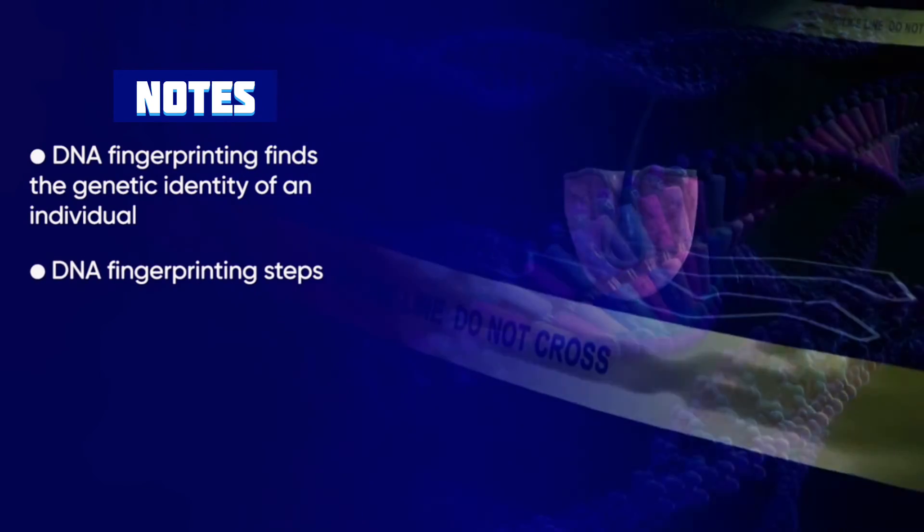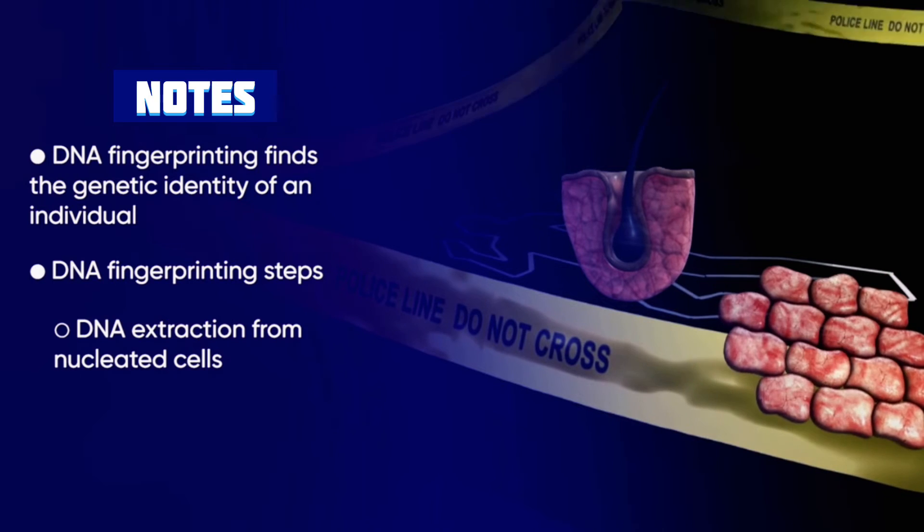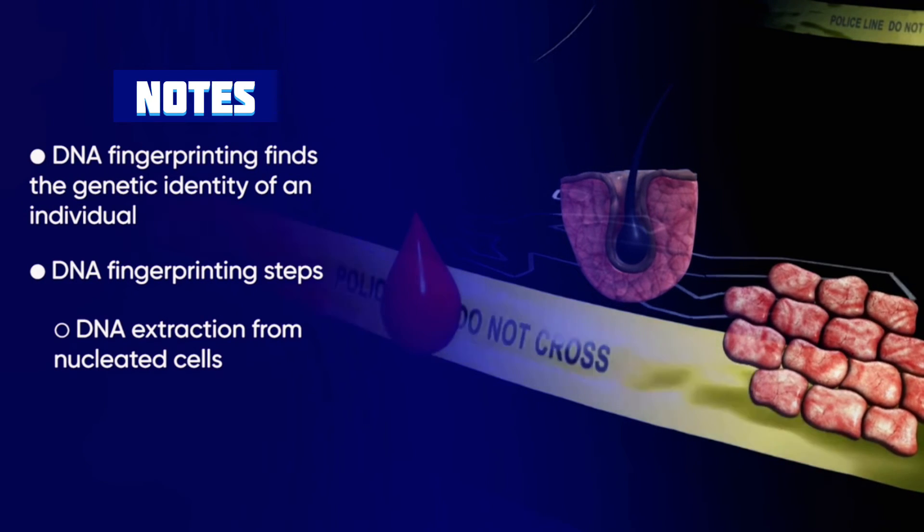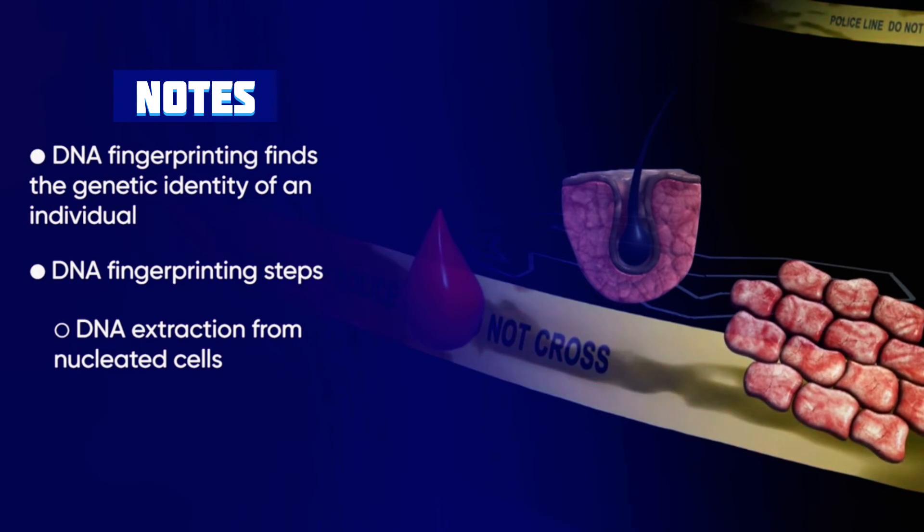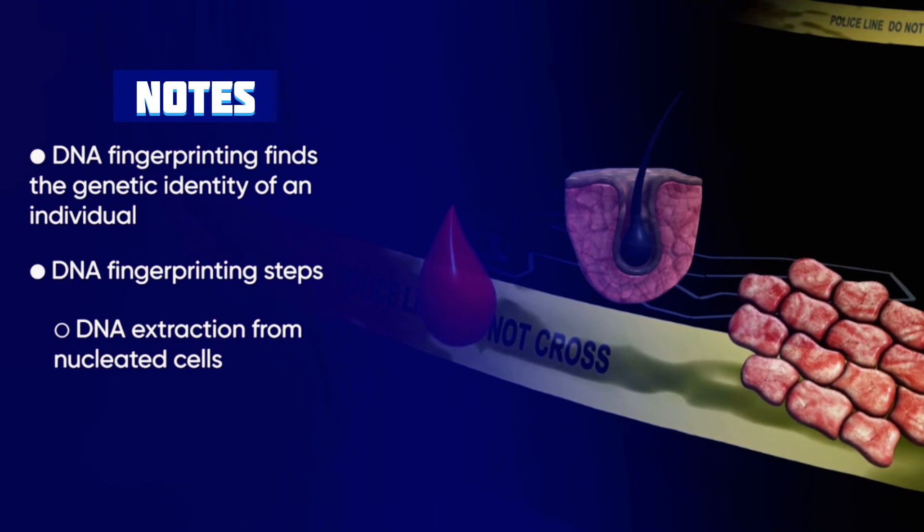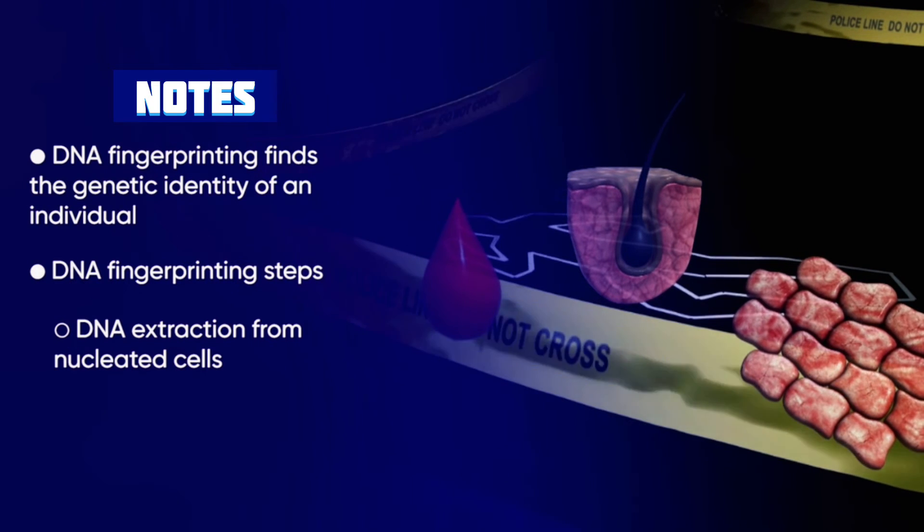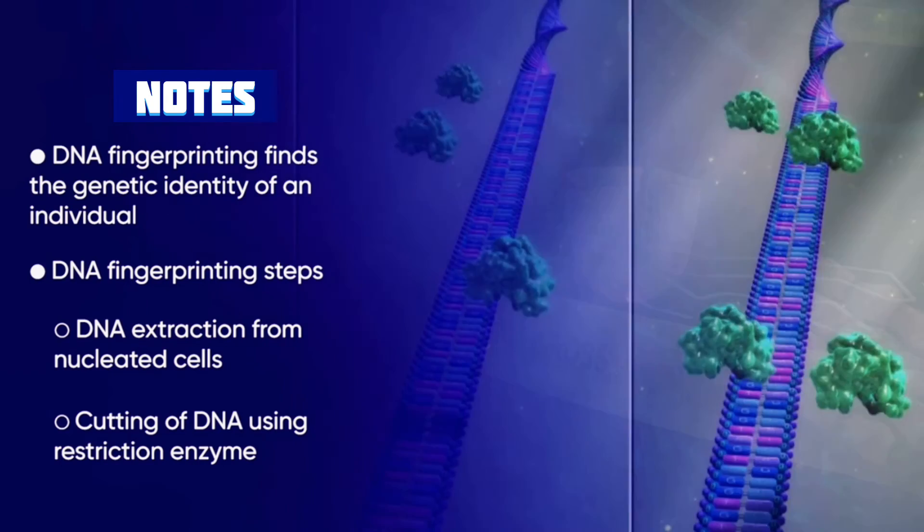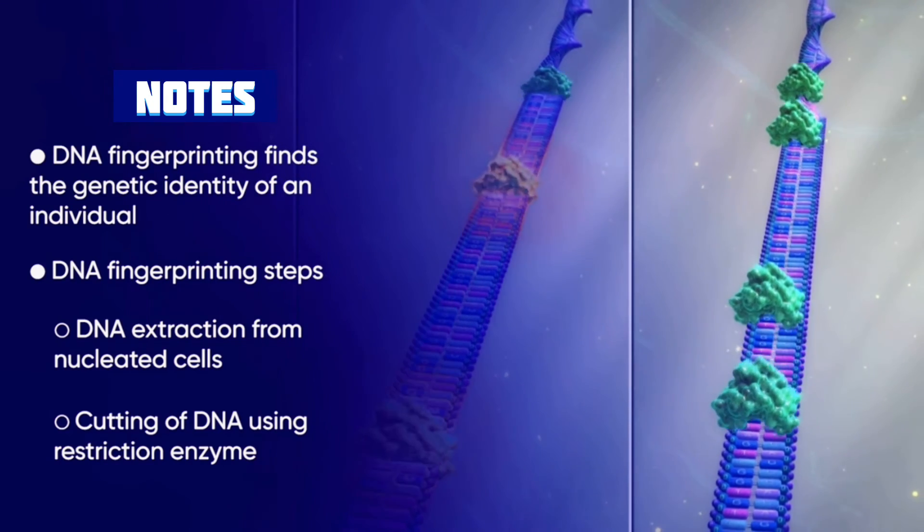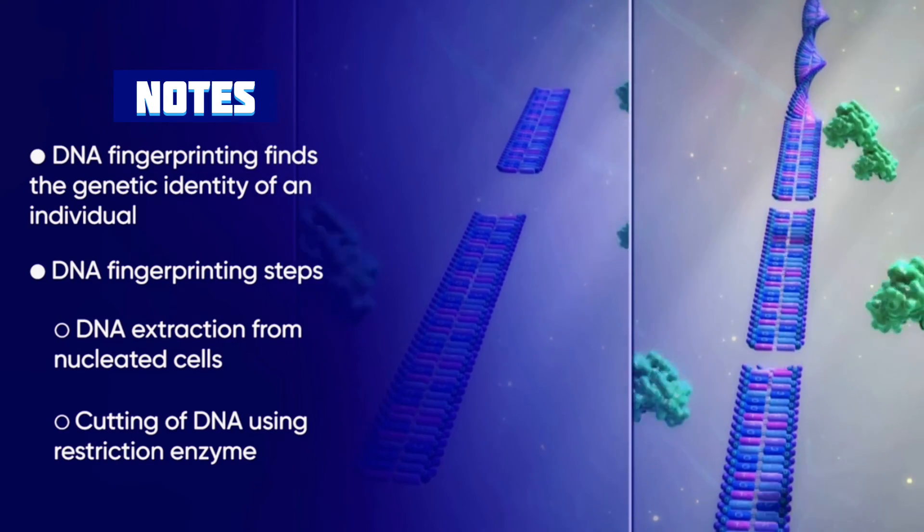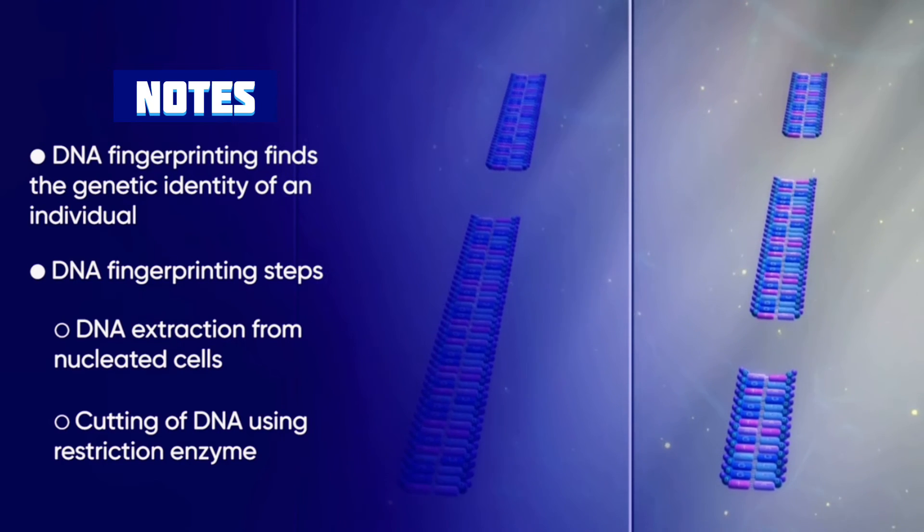The steps involved in DNA fingerprinting are: The extraction of DNA from the cells with nucleus like hair follicle, blood, semen or skin flakes. Cut the DNA using specific restriction enzymes which results in fragments of DNA of variable lengths.